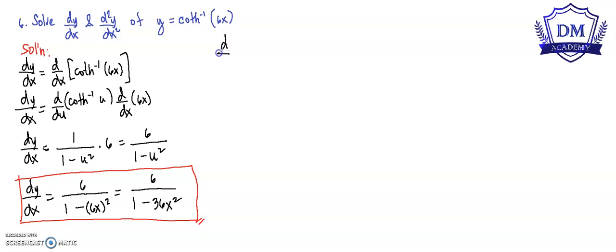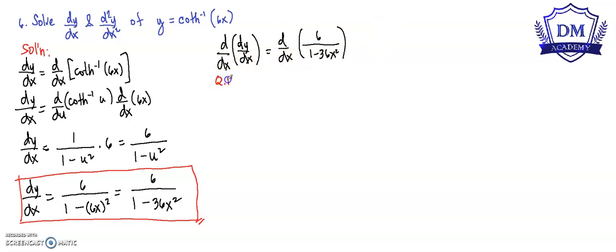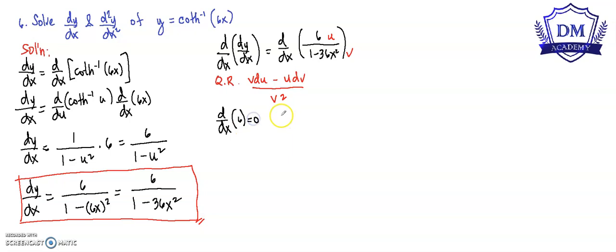Next, the second derivative is again the derivative of the first derivative. This is equal to d/dx of 6 all over 1 minus 36x squared. We will use the quotient rule: v du minus u dv all over v squared. We let u equal to 6 and v equal to 1 minus 36x squared. The d/dx of 6 is 0, and the d/dx of 1 minus 36x squared is equal to negative 72x. The v squared is the quantity of 1 minus 36x squared, squared.